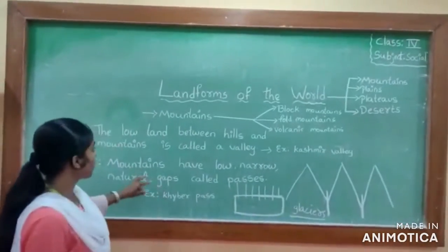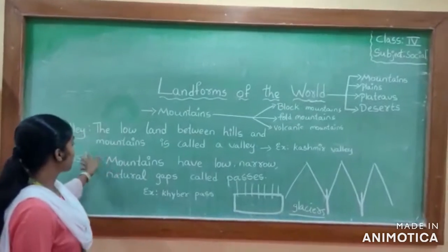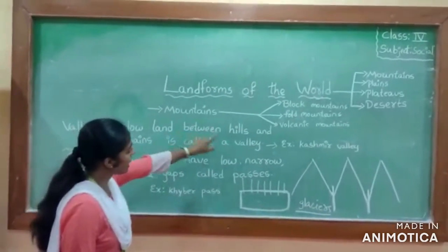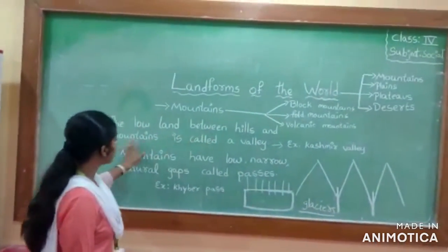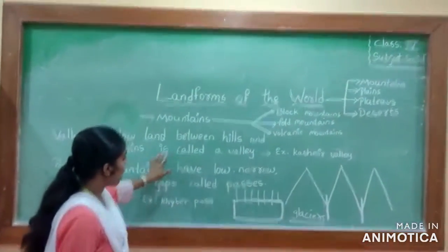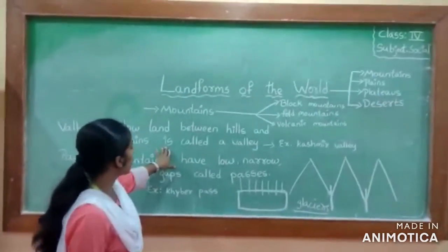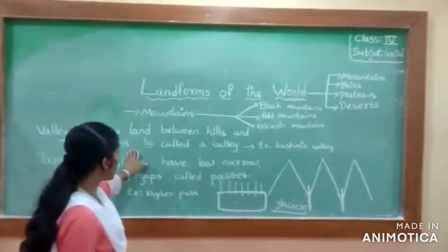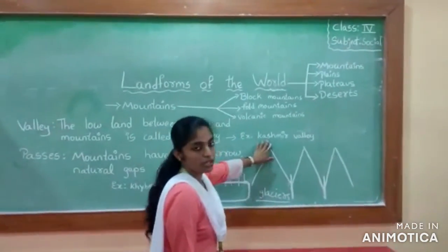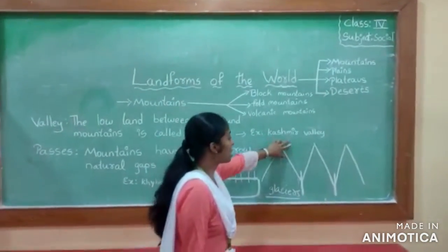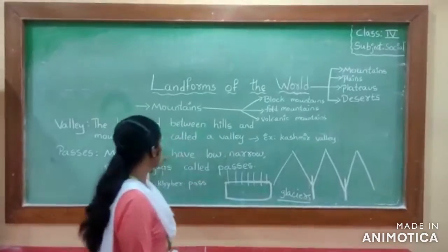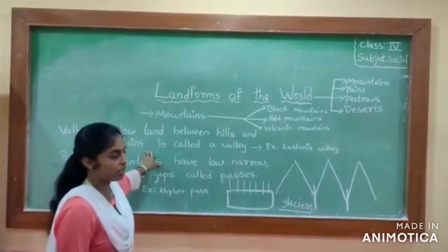So again, the definition: the low land between the hills and the mountains is called a valley. Our India also has a beautiful valley near Kashmir. The Kashmir valley is one of the most beautiful valleys in our country.